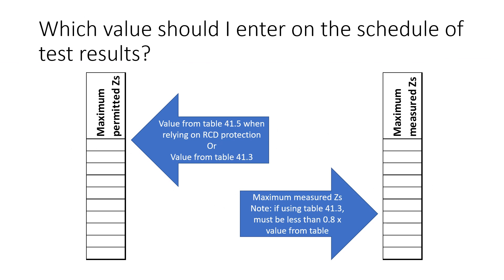So which value should I enter on the schedule of test results? If we are relying on the 30 milliamp RCD for fault protection, then we could use the value required by table 41.5 — so that would be 1667 ohms for a 30 milliamp RCD or RCBO. If the maximum measured ZS is within the maximum permitted ZS required by table 41.3, then I would enter the value from table 41.3 — so that's 1.37 ohms for a 32 amp type B RCBO. But when we record the maximum measured ZS on the right hand side of the test results, we need to ensure that the maximum measured ZS doesn't exceed the formula in appendix 3, which relates to adjusting for operating temperature.